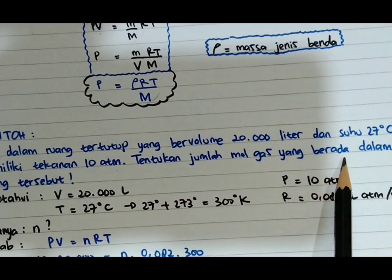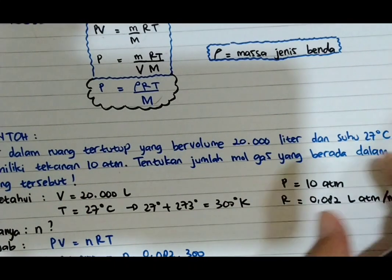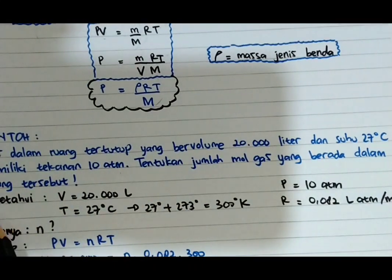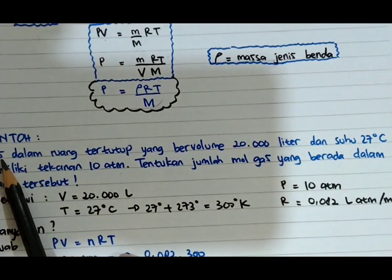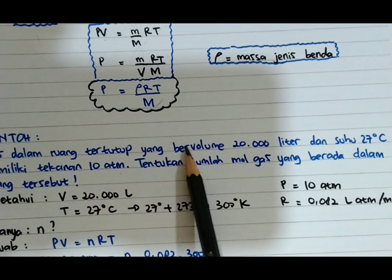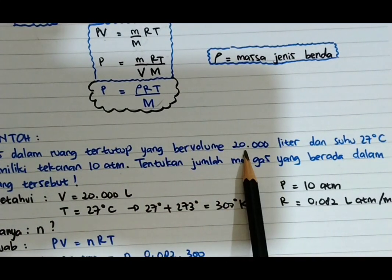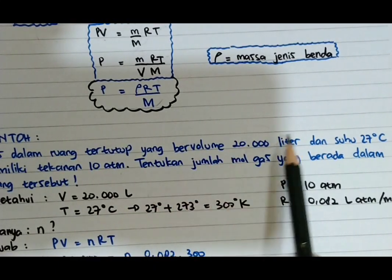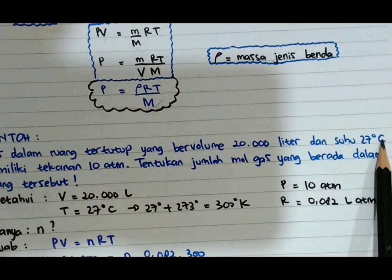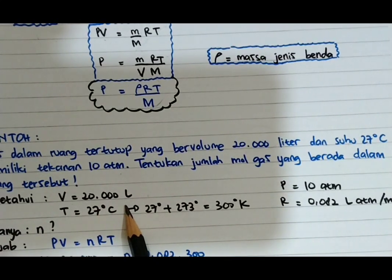Dari sini kita tahu bahwa diketahuinya: dari kalimat pertama, gas dalam ruang tertutup yang bervolume 20.000 liter, berarti V sama dengan 20.000 liter. Kemudian suhu 27 derajat Celsius, berarti T = 27°C.